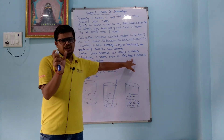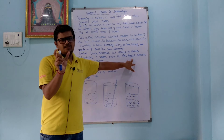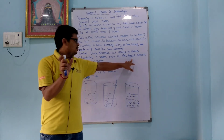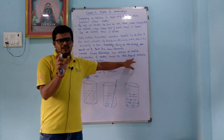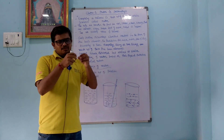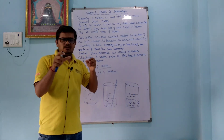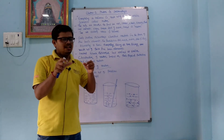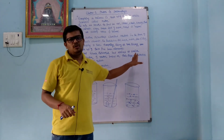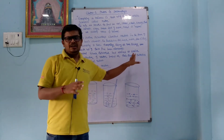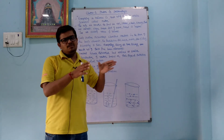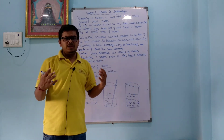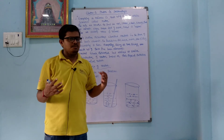Solids have atoms held closely together, so they are rigid in shape. In liquids, atoms and molecules are more separated, so they can flow — they are fluid in nature. In gases, atoms or molecules are so far apart that they produce pressure on the walls of their container.